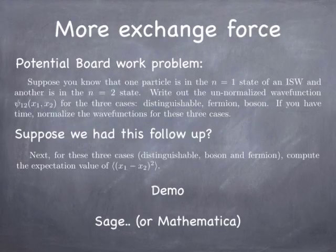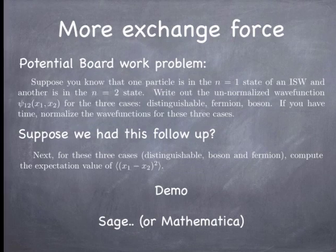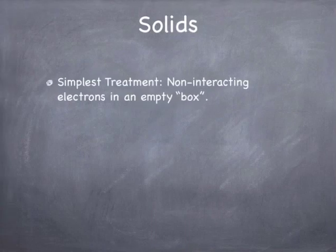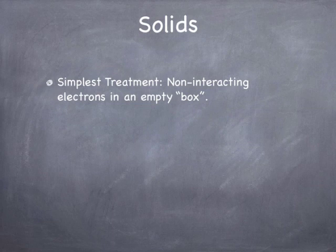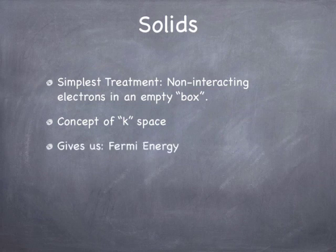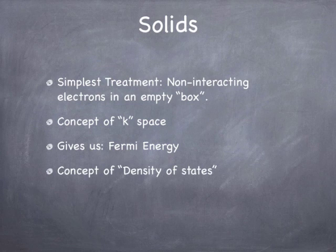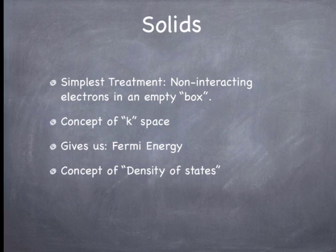So next we're going to move on from atoms. We're just getting a flavor of how this stuff works. We're going to move on and talk about solids. So, first of all, we're going to start with the simplest possible treatment. We have non-interacting electrons in an empty box. So we're ignoring electron-electron repulsion, and we're ignoring the fact that the box is made of atoms. We introduce a concept of k-space, we get a Fermi energy out of that, and we get a very important concept called the density of states.